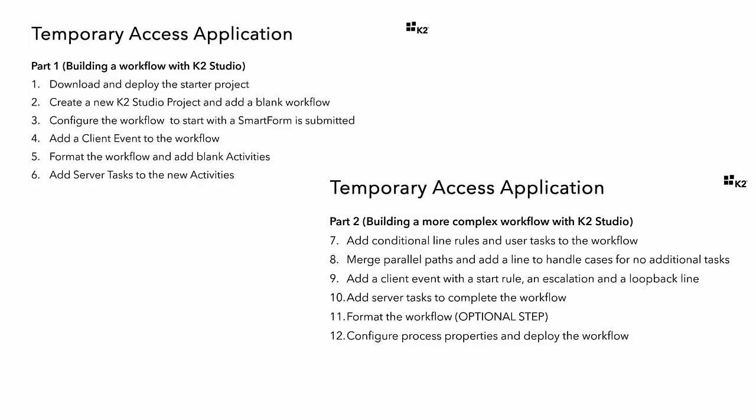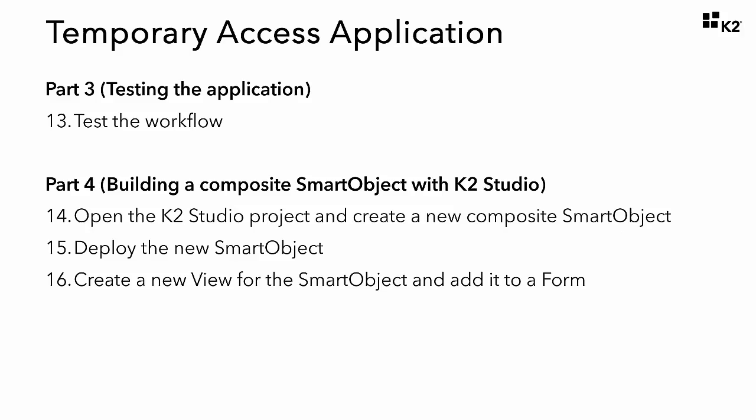In parts 1 and 2 of this tutorial, we built a workflow in K2 Studio to manage temporary access requests for an organization. In part 4, we will create a report against this data by combining the workflow reporting data with the temporary access request smart object data. In effect, we are going to combine the workflow history data with business data to build a report that is relevant to our users.